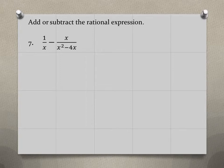To subtract these rational expressions, we need to get common denominators. And as you can see, denominators are very different. The first one is x, and the second one is x squared minus 4x.